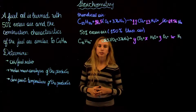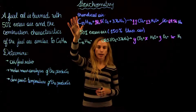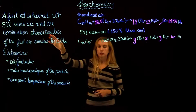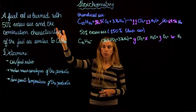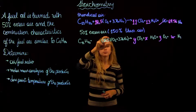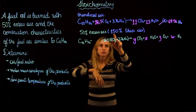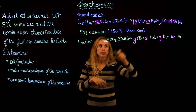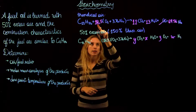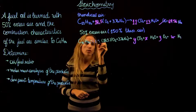We are told that 50% excess air is used for the combustion. So 50% excess air means 100% plus 50%, which is 150% of the theoretical air. That means we're going to need 1.5 times the theoretical air amount.